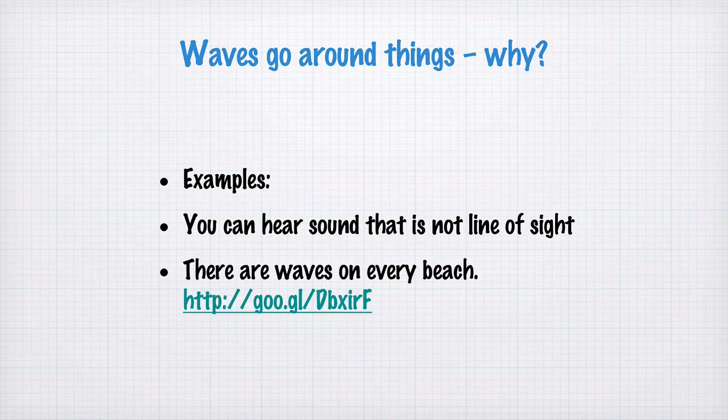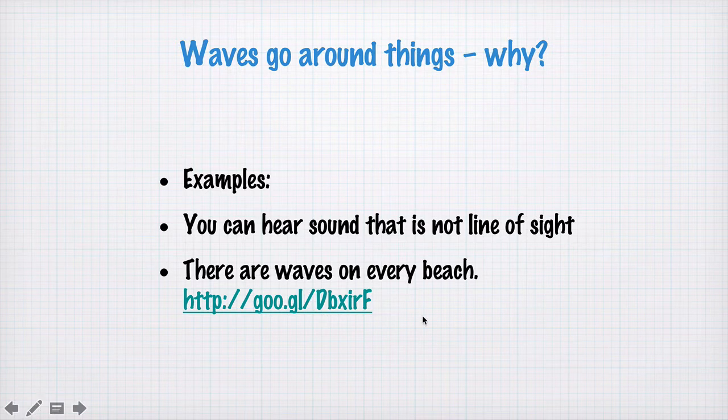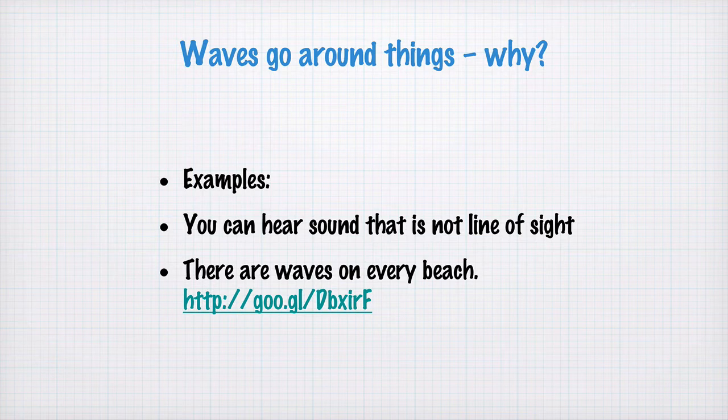And there are waves on every beach, as I've mentioned. If you take a trip with Google Earth and have a look on every beach, you'll see waves coming in towards the beach. Even if the direction of the waves out on the open ocean is not facing towards the beach, the waves will wrap around and head towards the beach. So waves go around things.